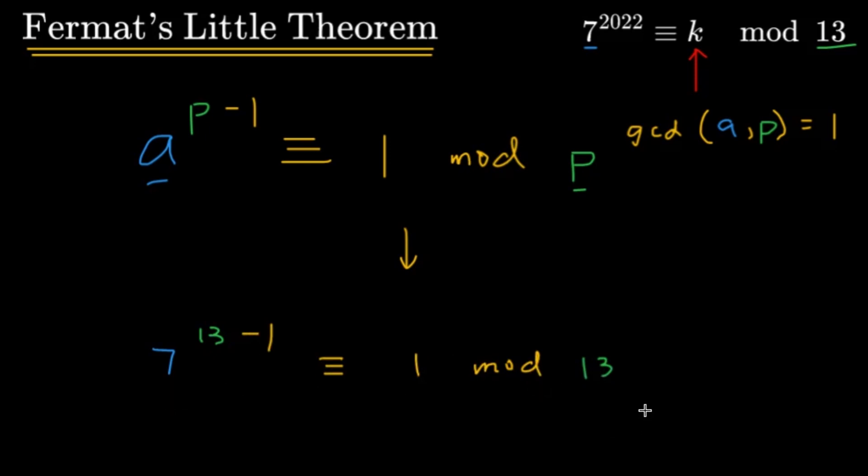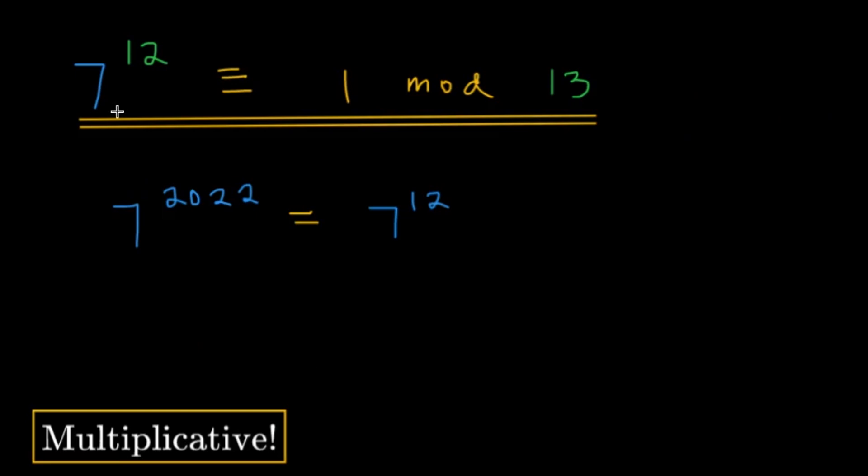Now we're going to use this to help us simplify this big number of 7 raised to 2022. So the 13 minus 1 here, let's just make it 12. So by the Fermat-Little theorem, we know that 7 raised to 12 will be congruent to 1 mod 13. And here, we're going to use the fact that a property of modulo is being multiplicative.